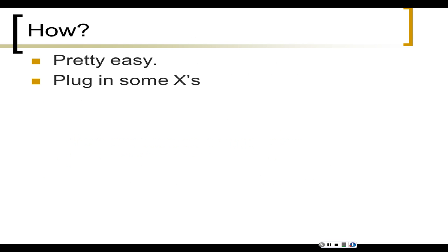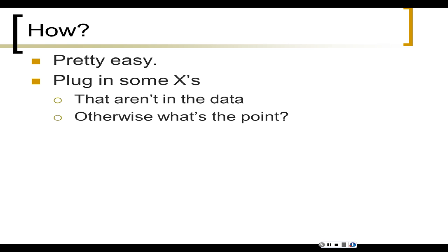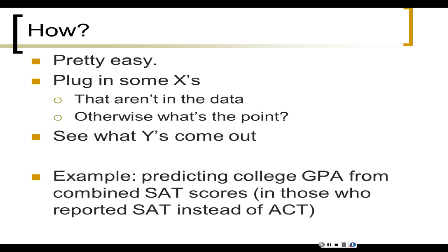Prediction isn't that hard — you've done this in algebra class. The only thing that's missing is learning how to map that easy prediction process onto statistics with real data. You just plug in some X values that aren't in your data — otherwise you'd already have a predicted Y. Then you look at what Y values come out. Those are predicted Y values, not real Y values. It's our best prediction: on average, if a person had this X value, their Y variable would be such and such.